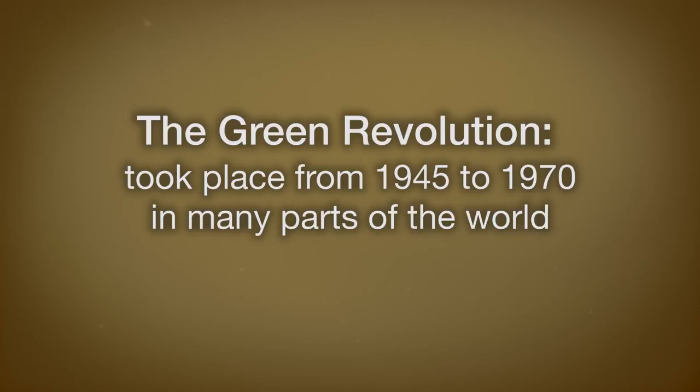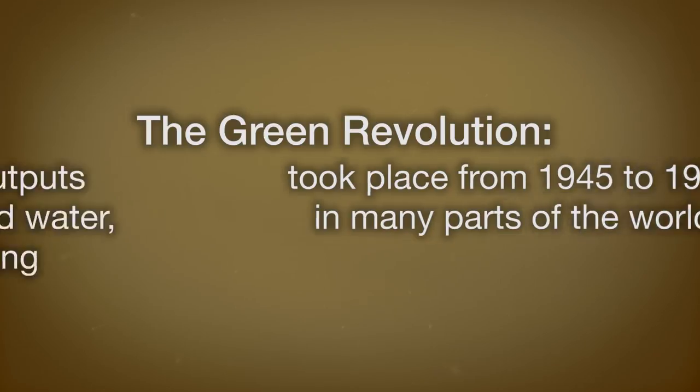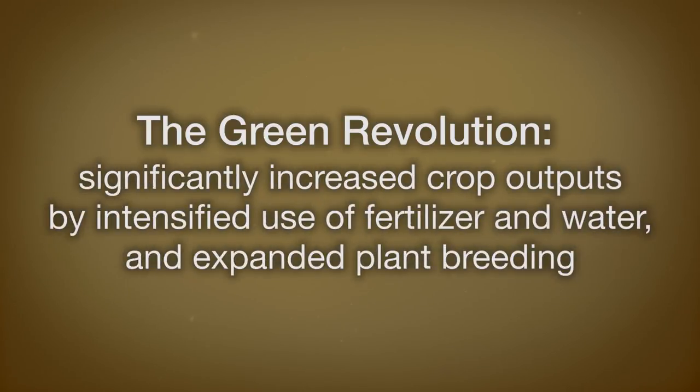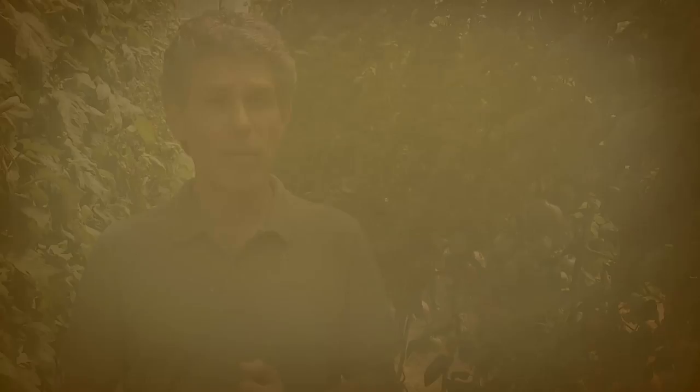The Green Revolution was primarily from 1945 to 1970 in many parts of the world. It led to significant increased crop output through increased inputs of fertilizer, water, and some plant breeding. Norman Borlaug received the Nobel Peace Prize in 1970 for developing many of these ideas of the Green Revolution, but the Green Revolution also led to some adverse consequences to the environment.